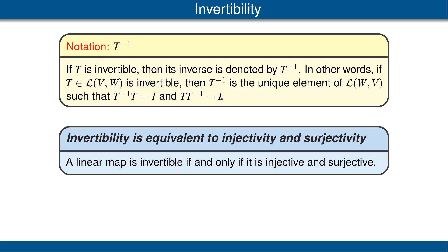Our next result states that a linear map is invertible if and only if it is injective and surjective. You might think that this is obvious and there's nothing to prove here, but that's not quite the case. If we think about functions under composition, it's clear that a function has an inverse if and only if it's injective and surjective. But we're requiring the inverse of the linear map to be also a linear map. Thus the content of this theorem is: if we have a linear map and it's injective and surjective, then the inverse in the function theory sense is actually linear. This is not hard to prove, but it does need to be proved. Please look at the proof in the book.